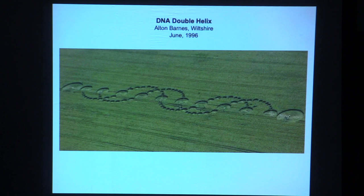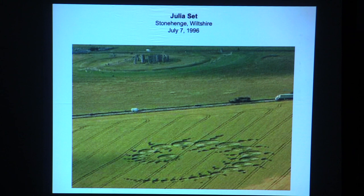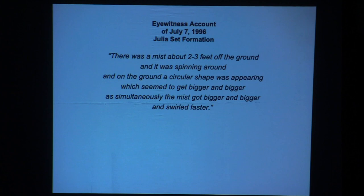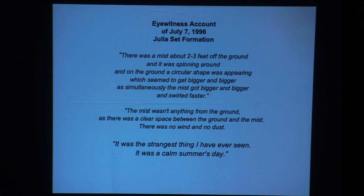You can see why this is called the DNA double helix, right next to Stonehenge. We also have the Julia set — a sophisticated mathematical equation, a visual representation you can look up online. And we have a witness: this happened in broad daylight. Most formations happen in the middle of the night regardless of weather, but in this case it happened in broad daylight. Someone watched it happen: there was a mist about two to three feet off the ground spinning around. On the ground a circular shape was appearing, getting bigger and bigger as the mist swirled faster. The mist wasn't from the ground — there was a clear space between the ground and the mist. No wind, no dust. It was a calm summer day. What an impression that would make on you.